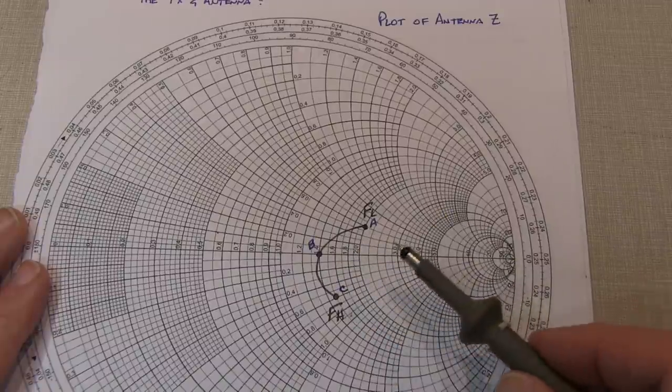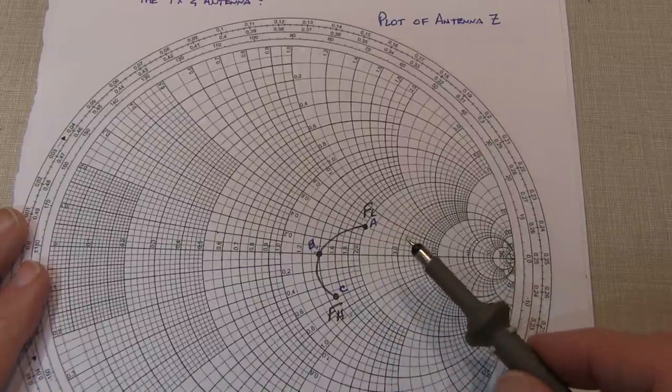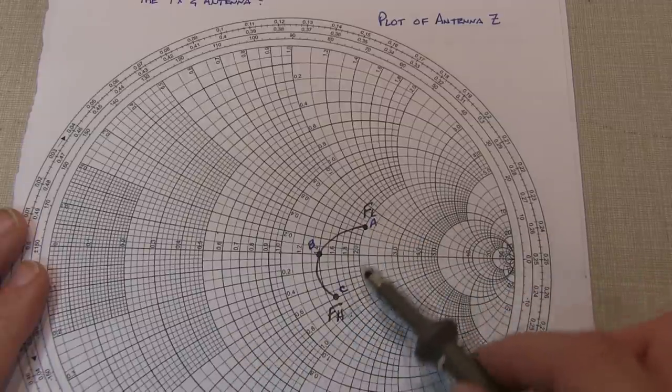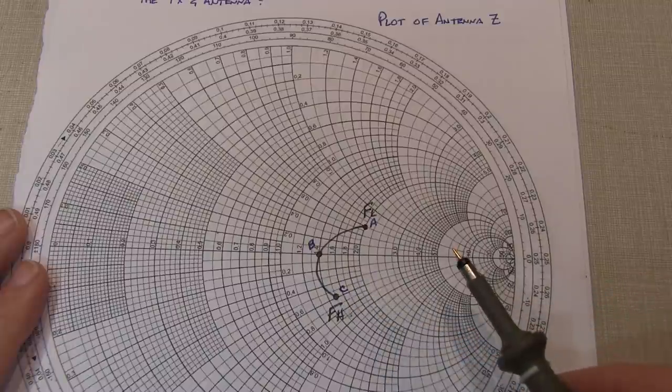Now, there's a simple plot of a fictitious antenna with some starting line length, and plotting the impedance on a Smith chart from low frequency to high frequency. And I've just highlighted three points on that chart.